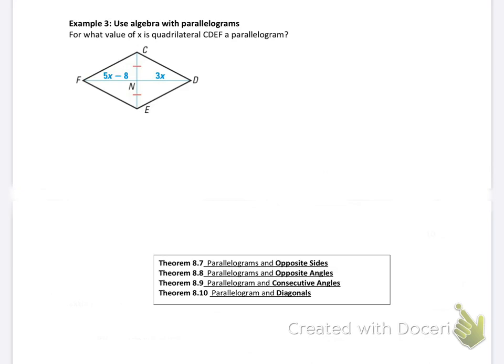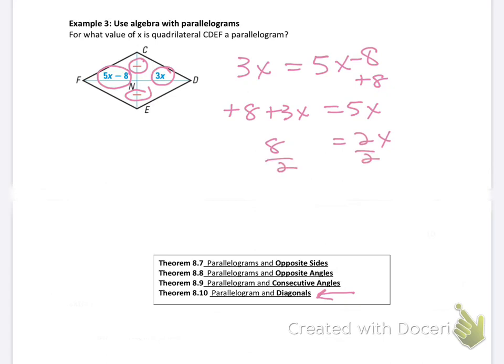Example 3: For what value of x is quadrilateral CDEF a parallelogram? For it to be a parallelogram, the diagonals have to bisect each other. This pair already does. Therefore, 3x has to equal 5x minus 8. So 3x equals 5x minus 8. Adding 8 to both sides: 8 plus 3x equals 5x. Subtracting 3x from both sides: 8 equals 2x. Dividing by 2: x equals 4. If x equals 4, then that shape qualifies as a parallelogram.